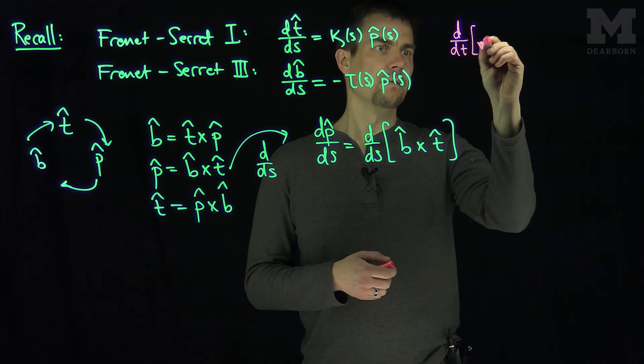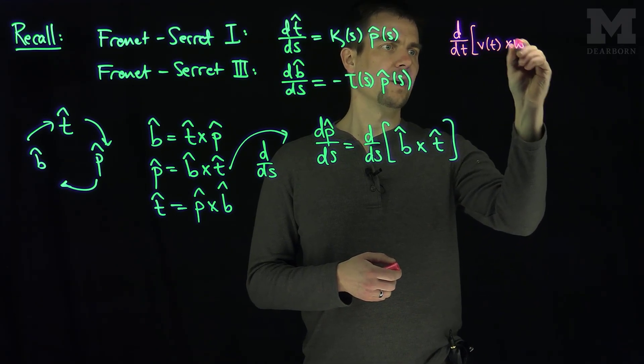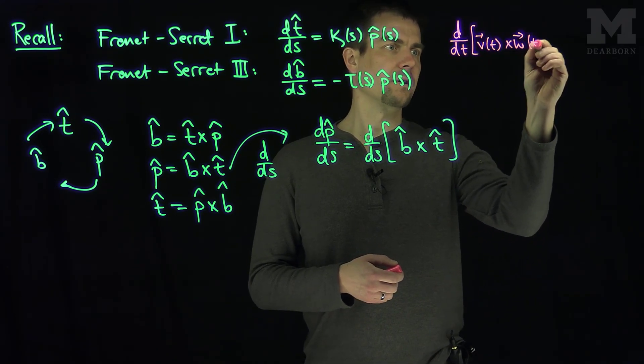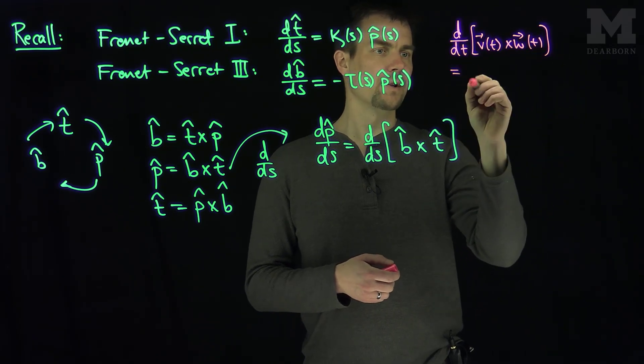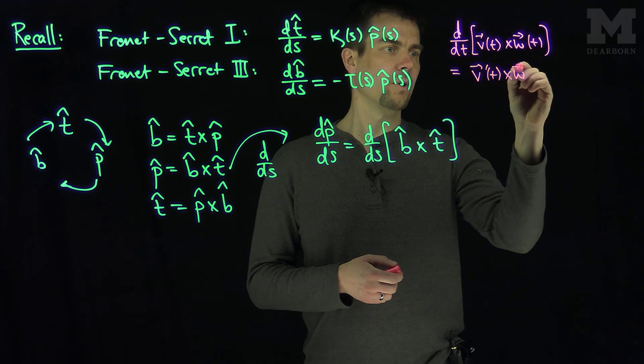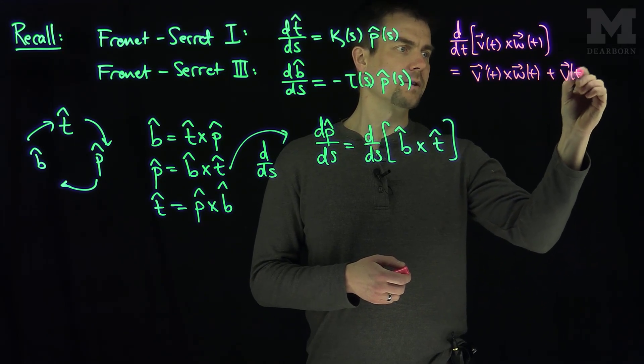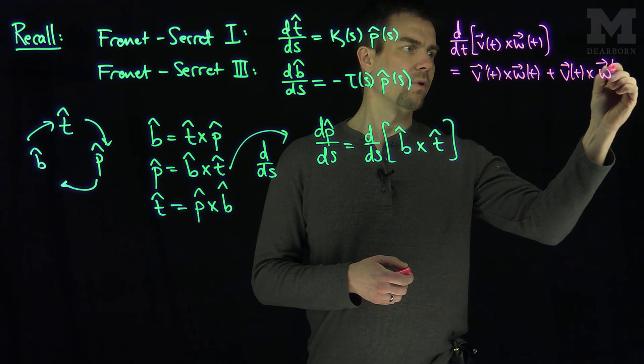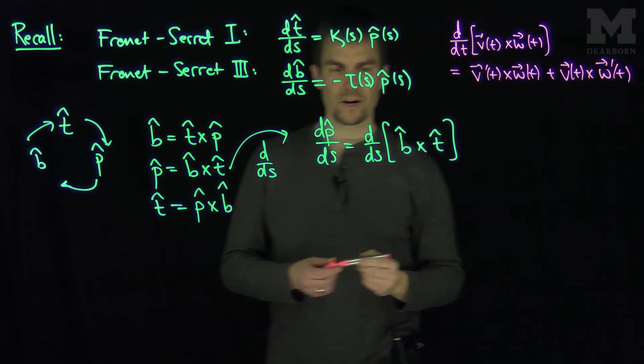The product rule for the cross product says that if I do the derivative with respect to anything t of v of t cross w of t, for vectors, for curves, this will be v prime of t cross w of t plus v of t, the order matters here now, cross w prime of t. That's the product rule for the cross product.